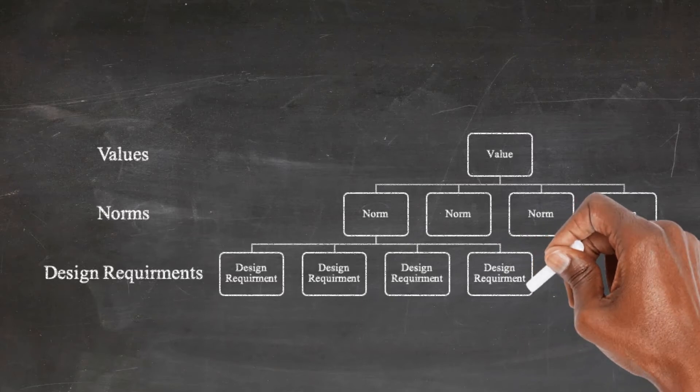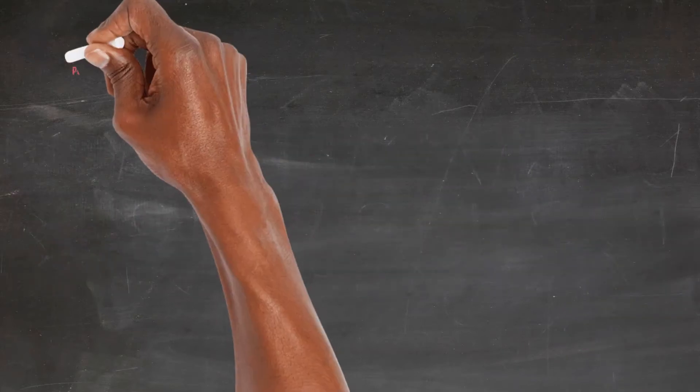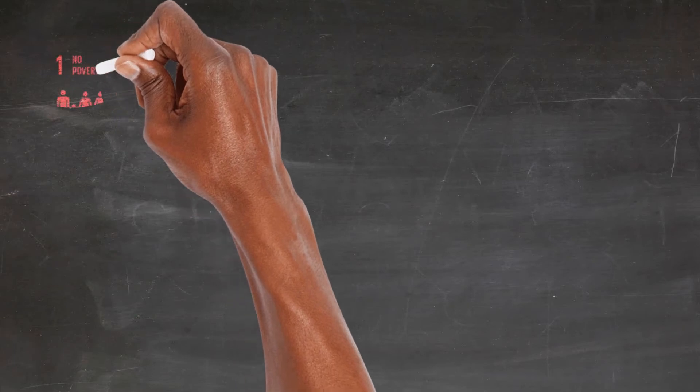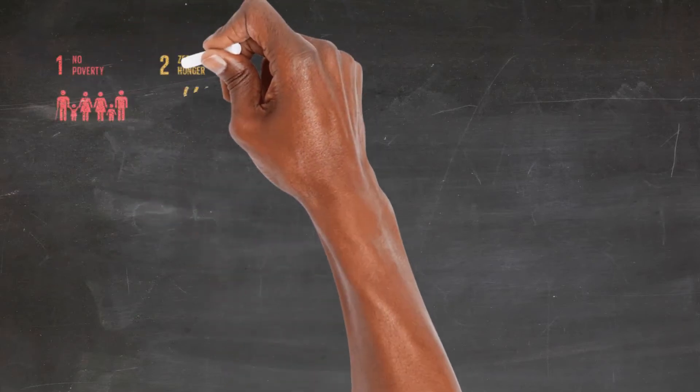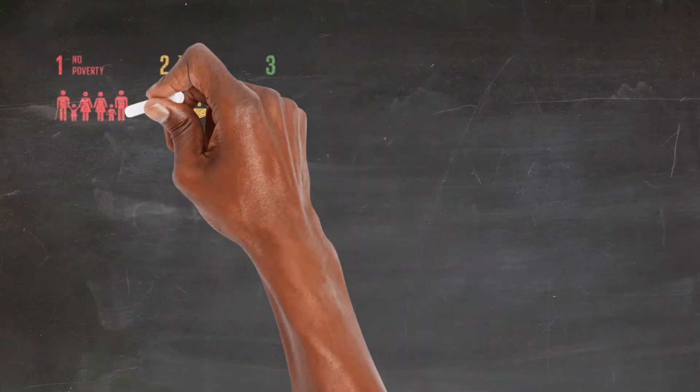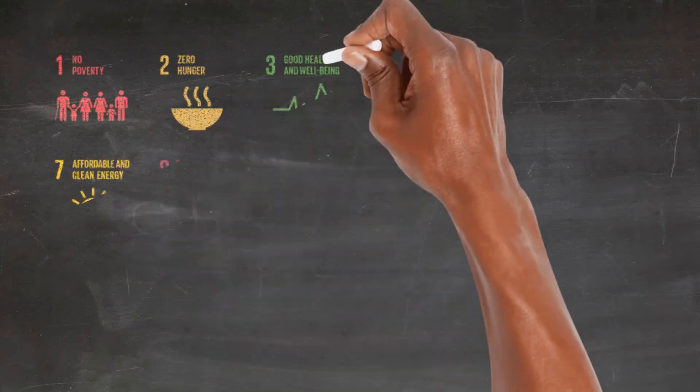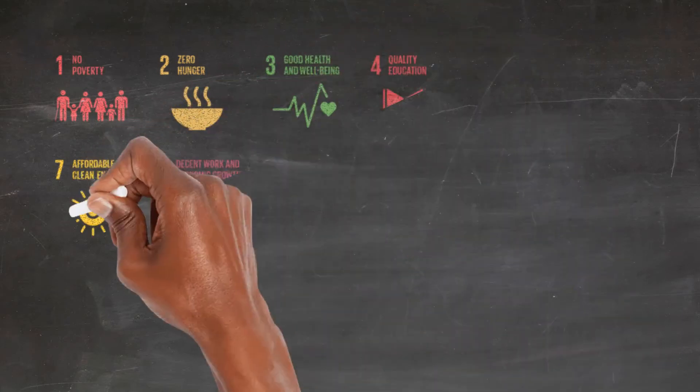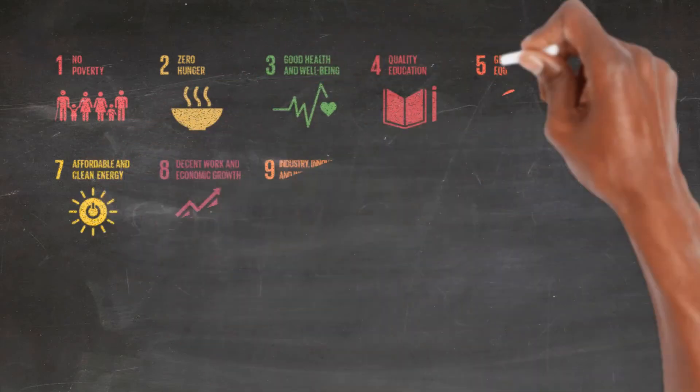The second proposal is to distinguish between values to be promoted and values to be respected. In order for a value-sensitive design approach to AI to be more than just avoiding harm and actually contributing to social good, an explicit orientation is required to socially desirable ends.